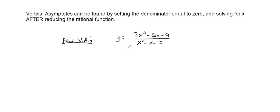Vertical asymptotes can be found by setting the denominator equal to 0 and solving for x after reducing the rational function. So you may be asked to find a problem where here's a rational function, find the vertical asymptotes. Well, before we instantly set this denominator equal to 0, let's go ahead and simplify if possible.